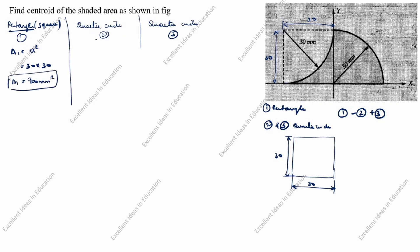Next, quarter circle A2. What is the area of a quarter circle formula? It is πR²/4. A2 = π × 30² / 4 = 707.14 mm².